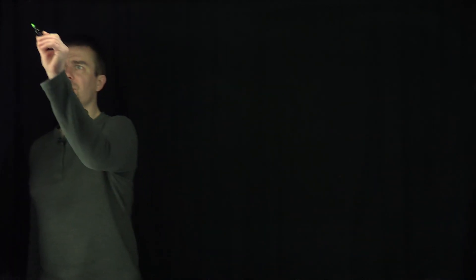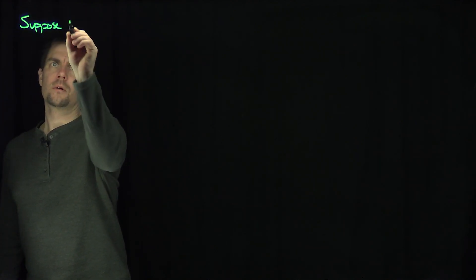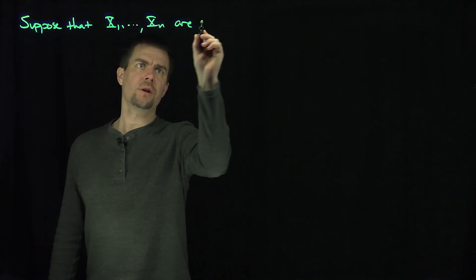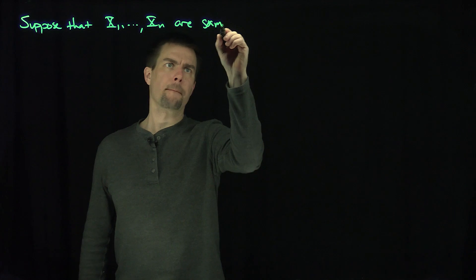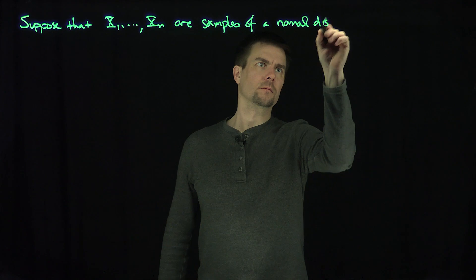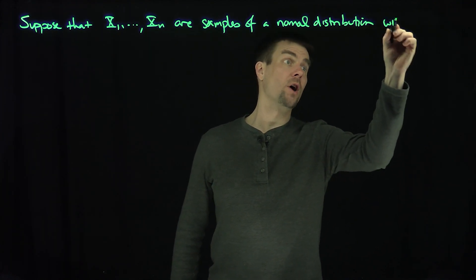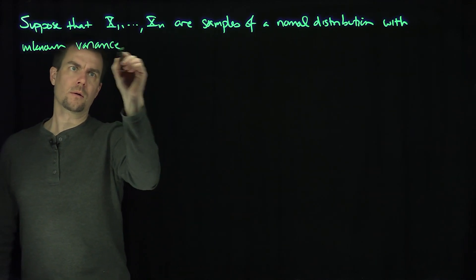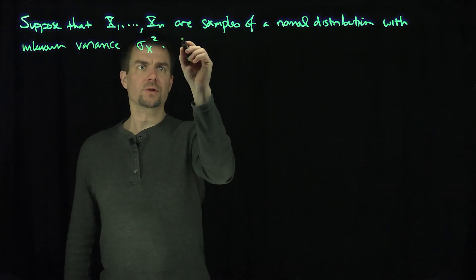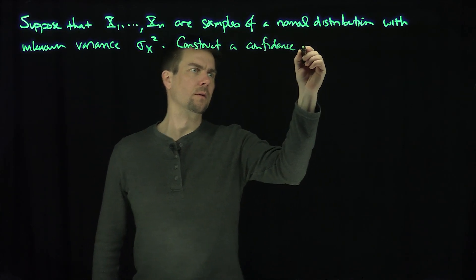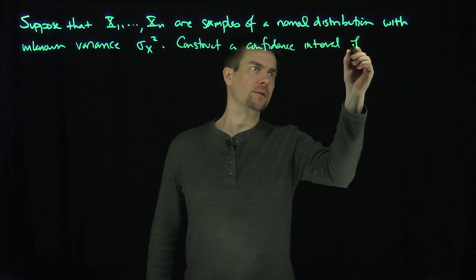Hello, students. In this video, we'll construct a confidence interval for an unknown variance. Let's suppose that x1 through xn are normally distributed — samples of a normal distribution — with unknown variance sigma x squared. Let's construct a confidence interval for sigma x squared.